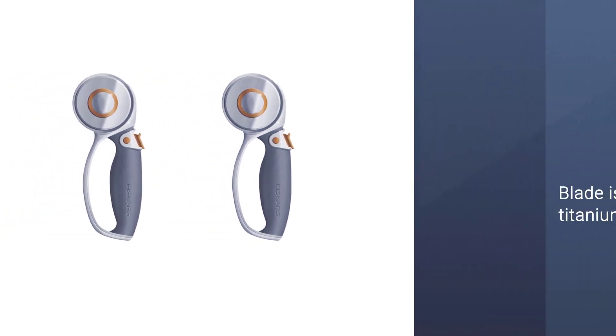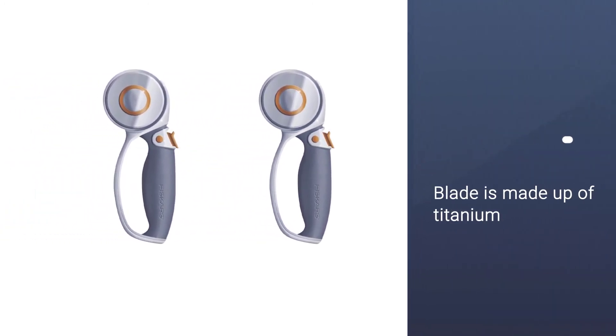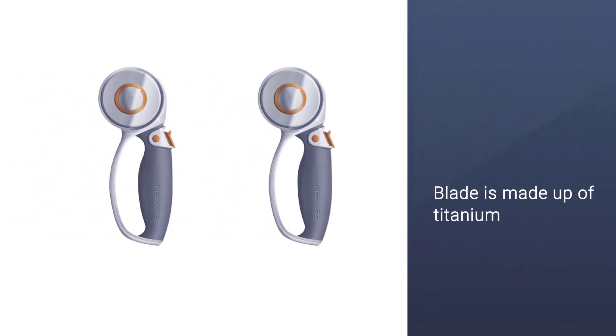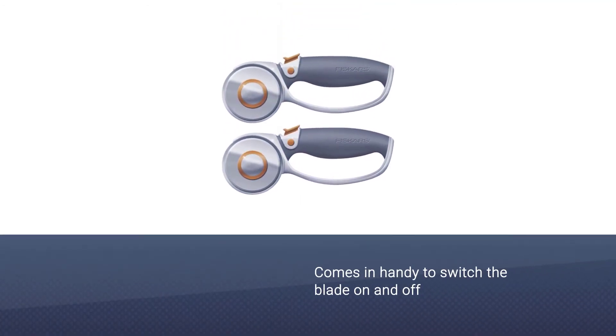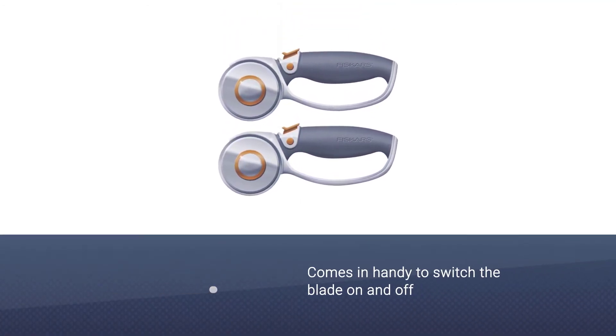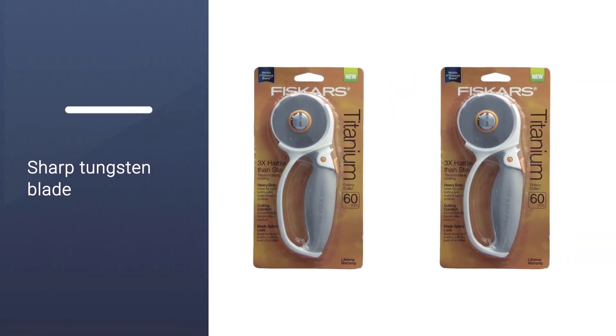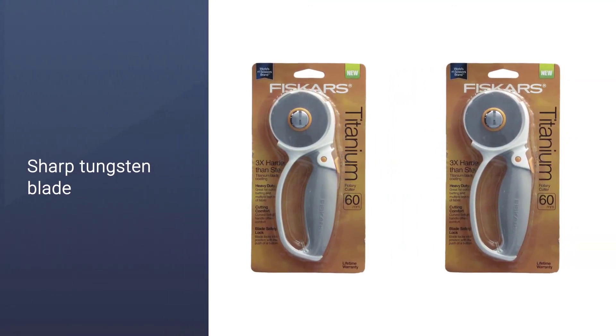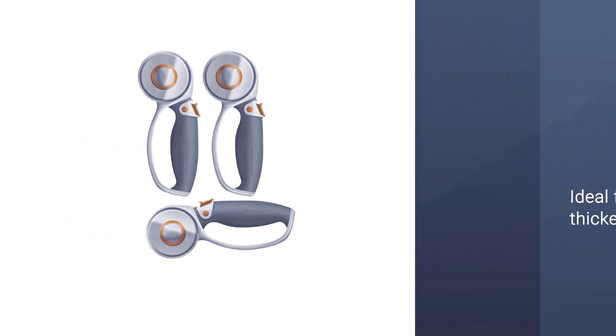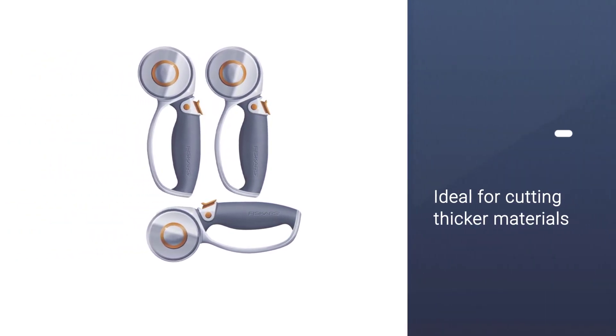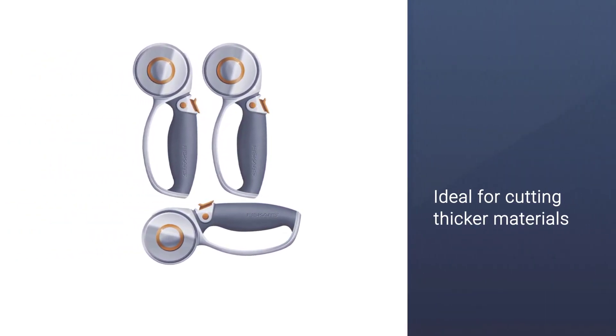This Fiskars model is the right one for you then, wide and sharp enough to cut through all types of craft materials including foam and thermal. Its blade is made of titanium placed on a container that exposes one quarter while cutting. This gives it a higher edge over the material being cut. Plus, the slide switch comes in handy to switch the blade on and off.